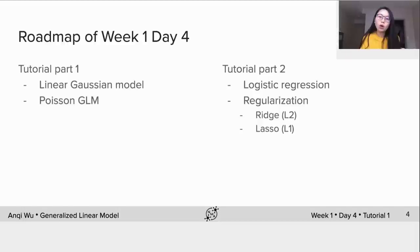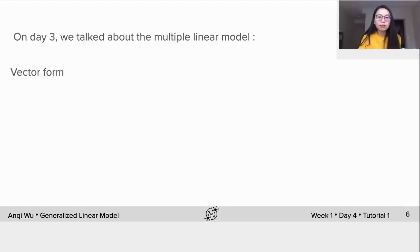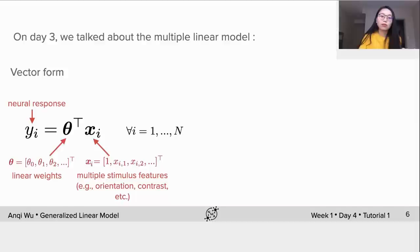In the first tutorial I will do a quick review of multiple linear regression model introduced on day 3 and show how to use it for spike train coding. On day 3 we talked about the multiple linear model. We can write it in vector form for one data point i as: yᵢ = θᵀxᵢ + η, where y is the neural response, θ is a vector of all linear weights, X is a vector collecting multiple stimulus features such as orientation, contrast, and so on.